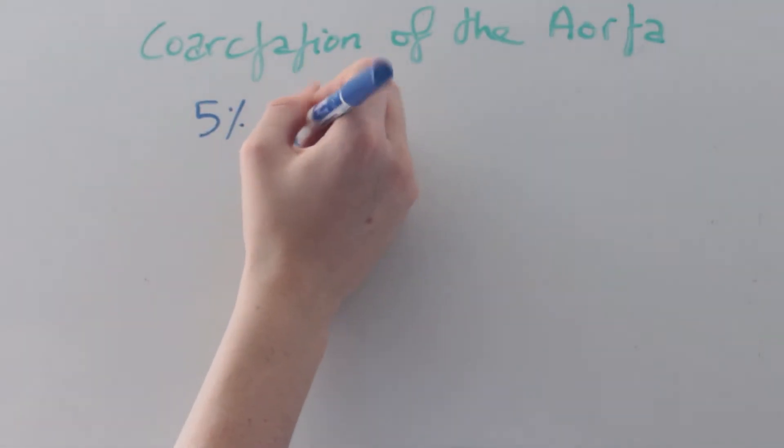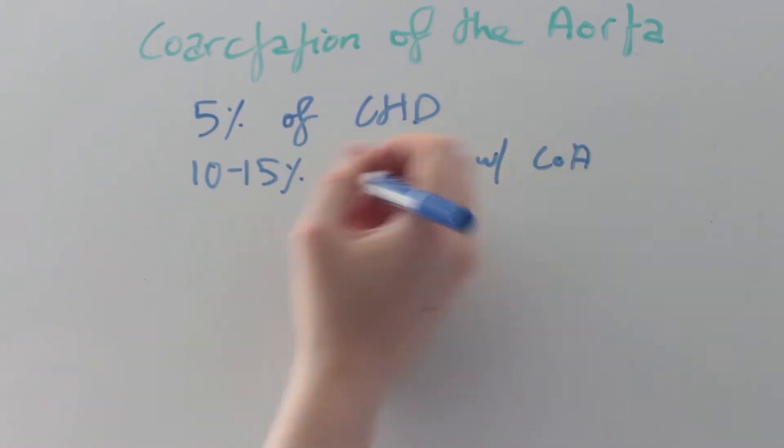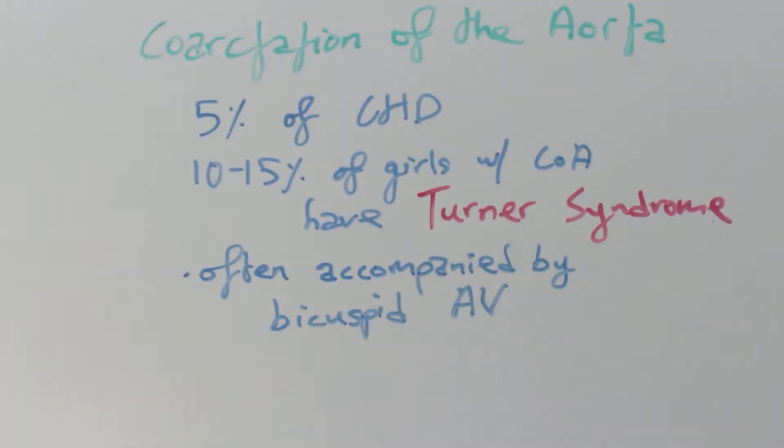Coarctation of the aorta accounts for 5% of congenital heart disease, and 10-15% of girls with it have Turner syndrome. The condition is often accompanied by a bicuspid aortic valve.